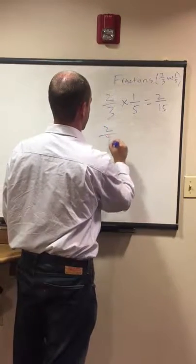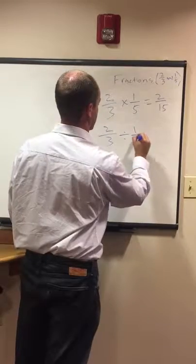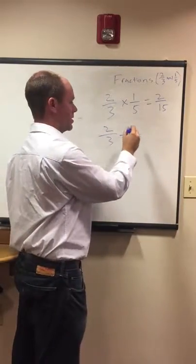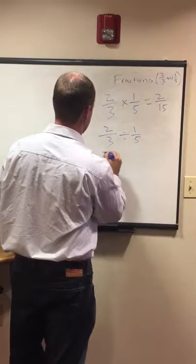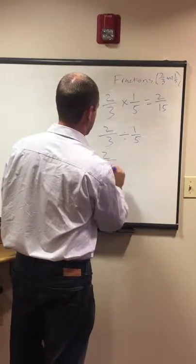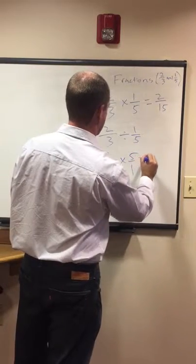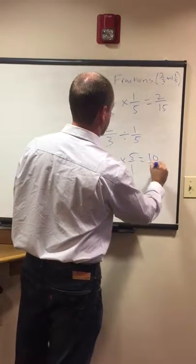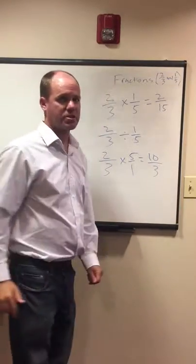The final one, if you divide 2/3 divided by 1/5. When you're dividing fractions, we need to flip this and find the reciprocal. So that means 2/3 and then multiply, 2/3 times 5/1 equals 10/3. And that's what we need to know about fractions.